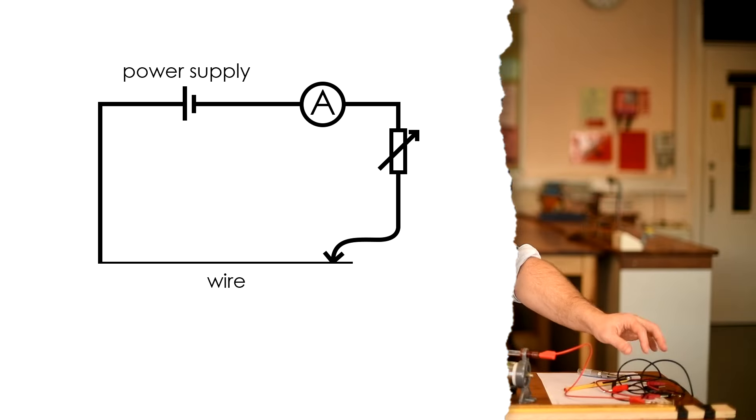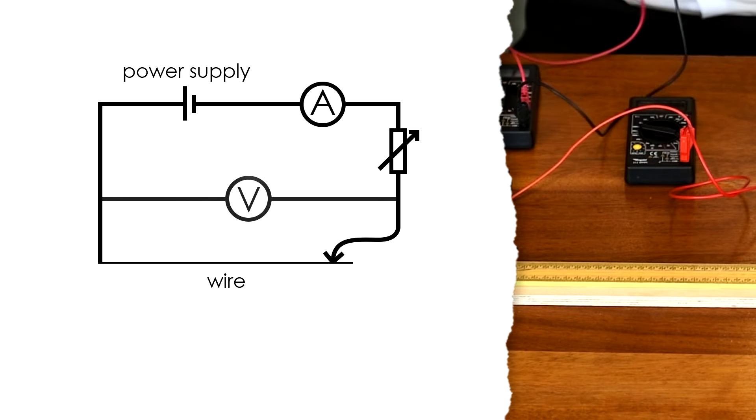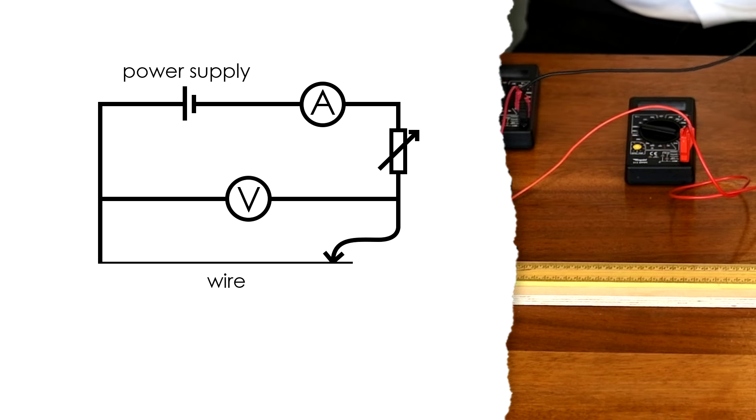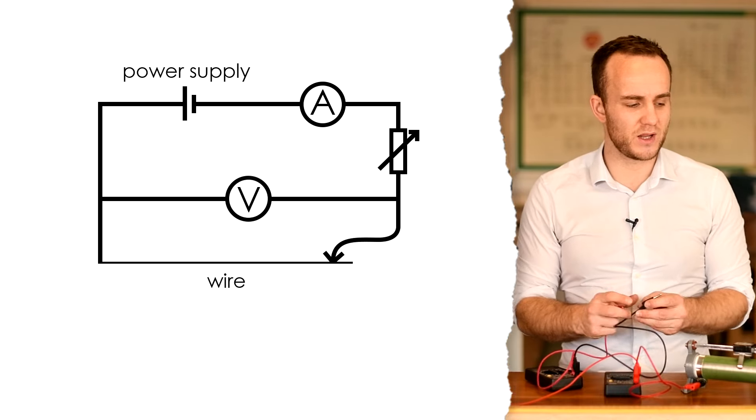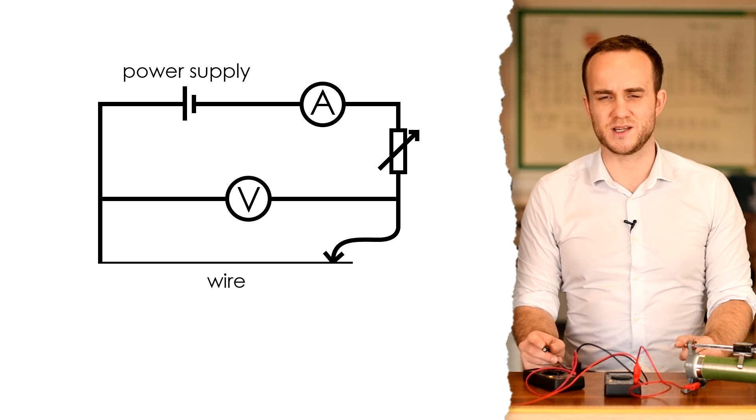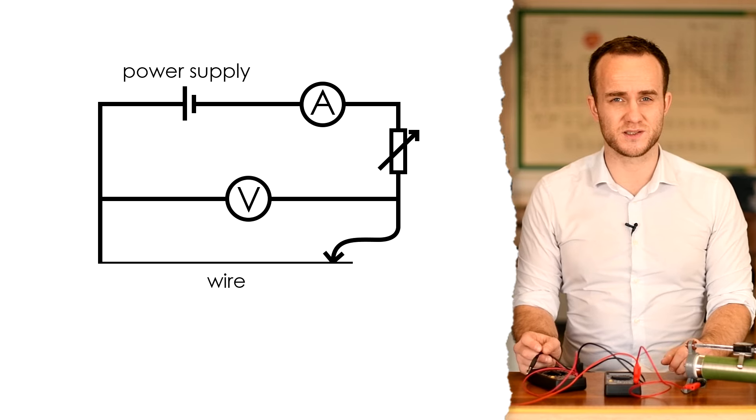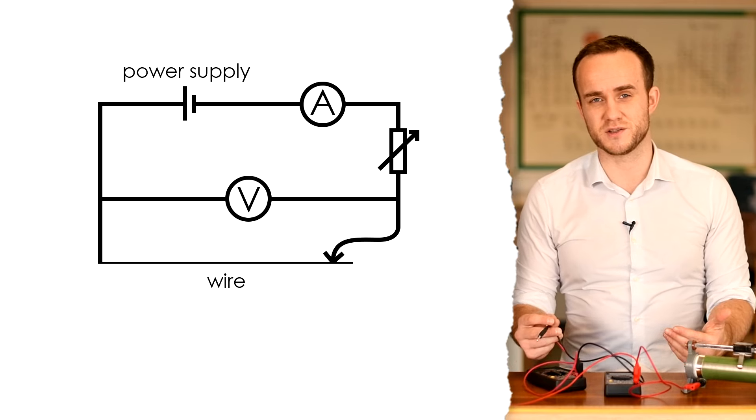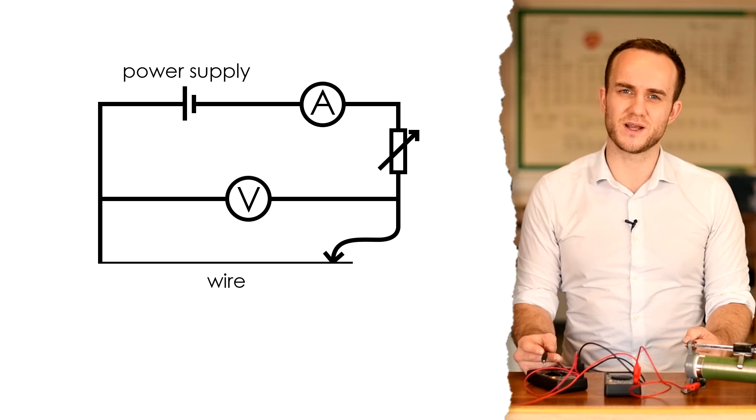So that's our current sorted, but now we need to measure our PD. Now there's two ways that you can do this. You can if you want to plug in the voltmeter in parallel with the whole circuit. So we could if we wanted to piggyback our leads onto the leads going on to the wire and then we could move this crocodile clip down the wire to change the length of it. However, that is going to change the overall resistance of the circuit and that's going to change the current, and so that means that there's going to be a slightly varying heating effect in the wire. That's not ideal.